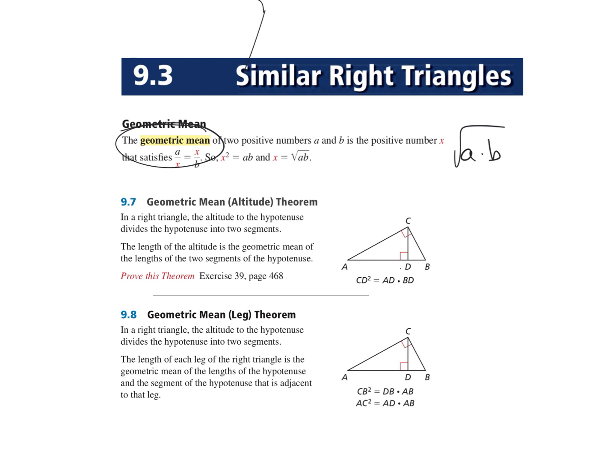So if I say, what's the geometric mean between 2 and 5? All you do is take 2 times 5, and that's 10, and then take the square root of that. And that'll be your geometric mean. Very simple. So they use this term, geometric mean, to figure out lengths of triangles.